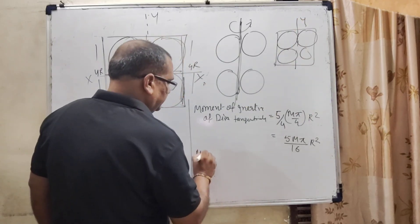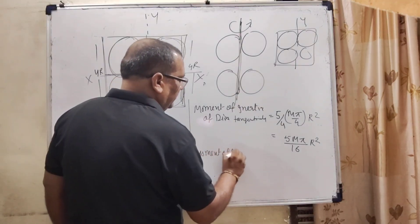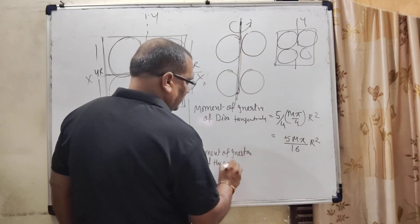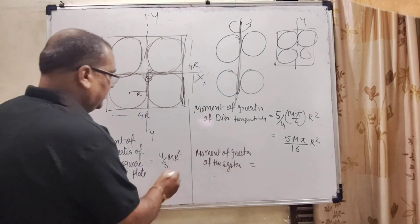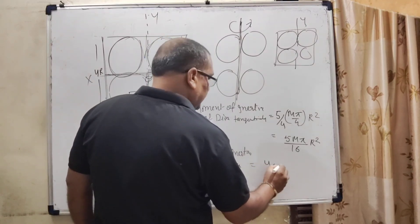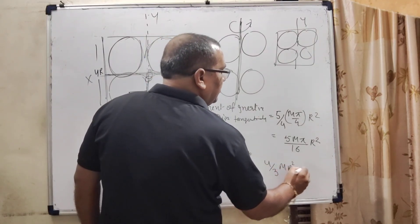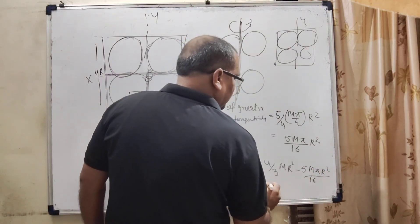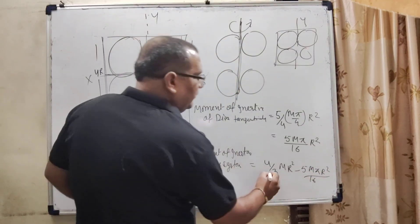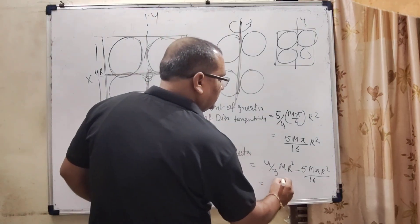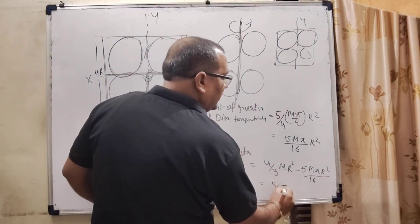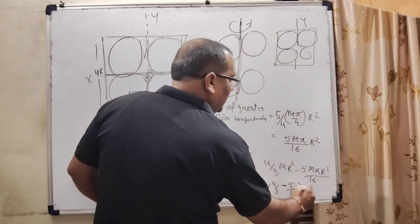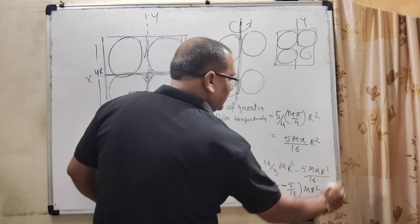Moment of inertia of the system: moment of inertia of the plate is 4 by 3 MR square minus 5 M pi R square by 16.